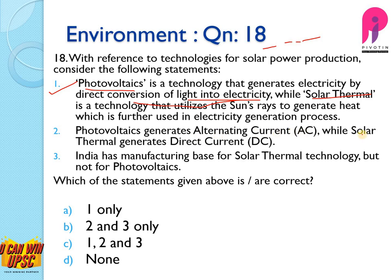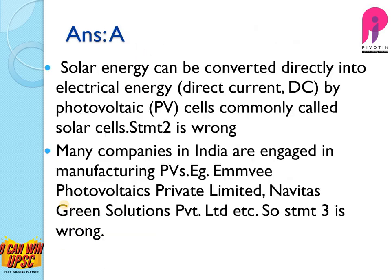Statement 2: Photovoltaics generate alternating current while solar thermal generates direct current — no, this is wrong; both generate direct current. Statement 3: India has a manufacturing base for solar thermal energy but not for photovoltaics — this is also wrong. The answer is A — 1 only. Companies such as AMV Photovoltaics Private Limited and Navitas Green Solutions Private Limited are engaged in manufacturing photovoltaics in India.